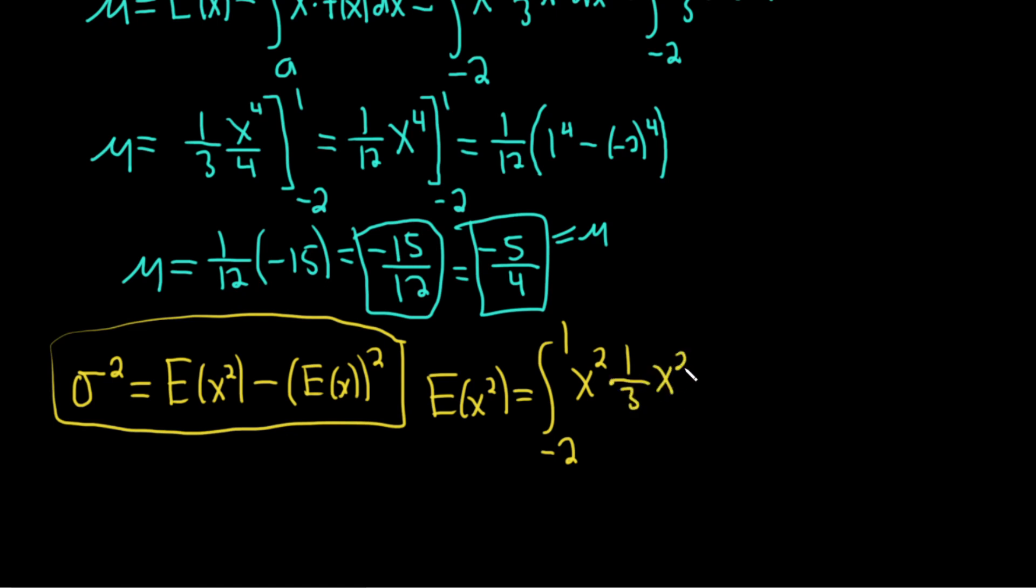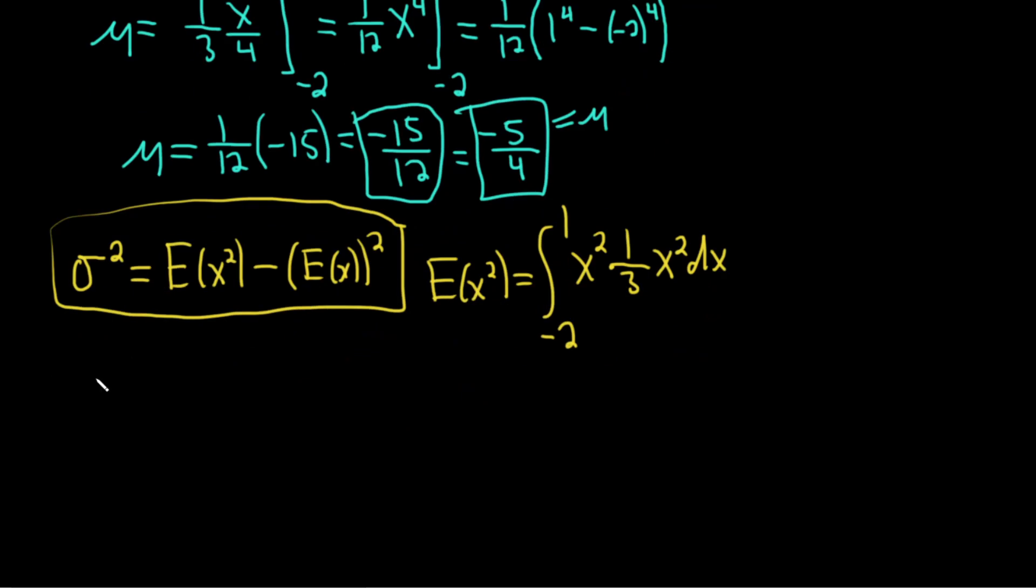We can multiply these and add the exponents. So E(x²) equals the integral from negative 2 to 1 of one-third x to the fourth dx.